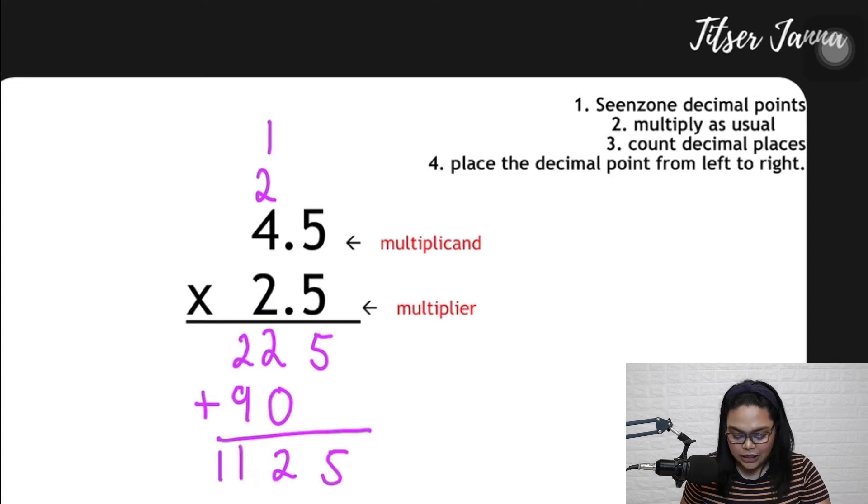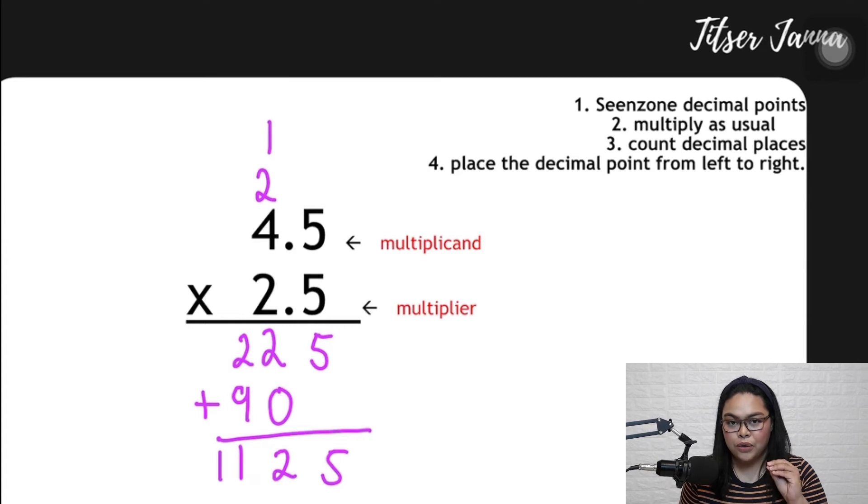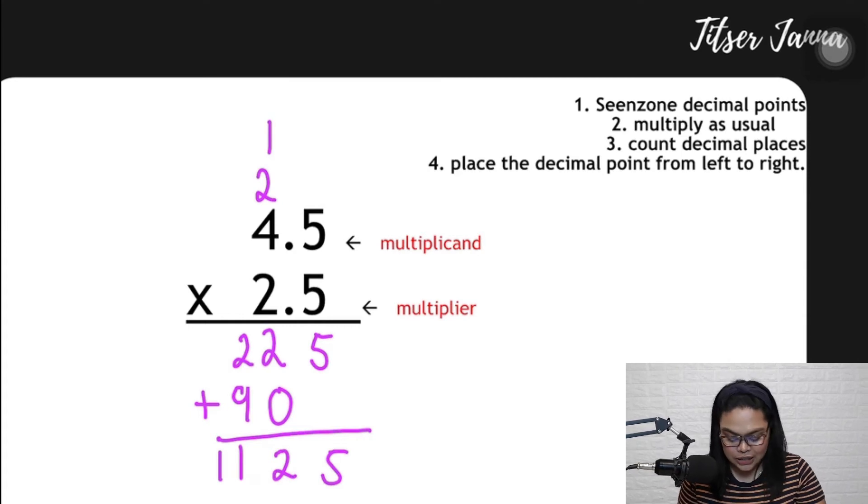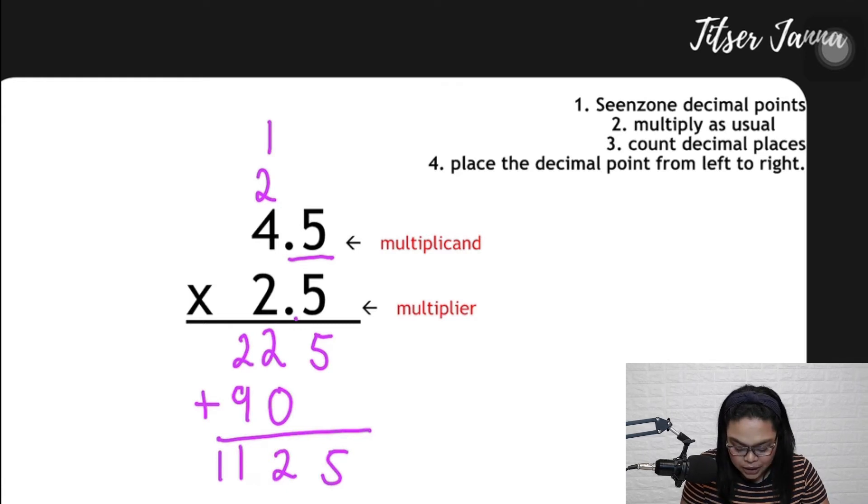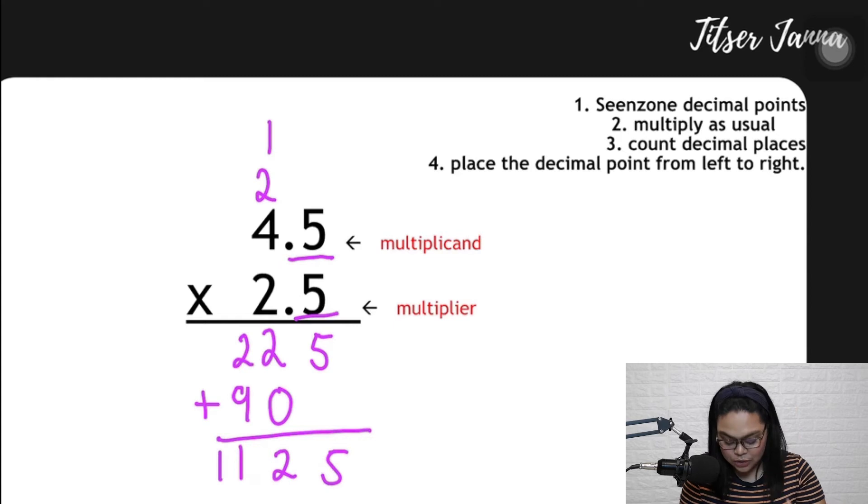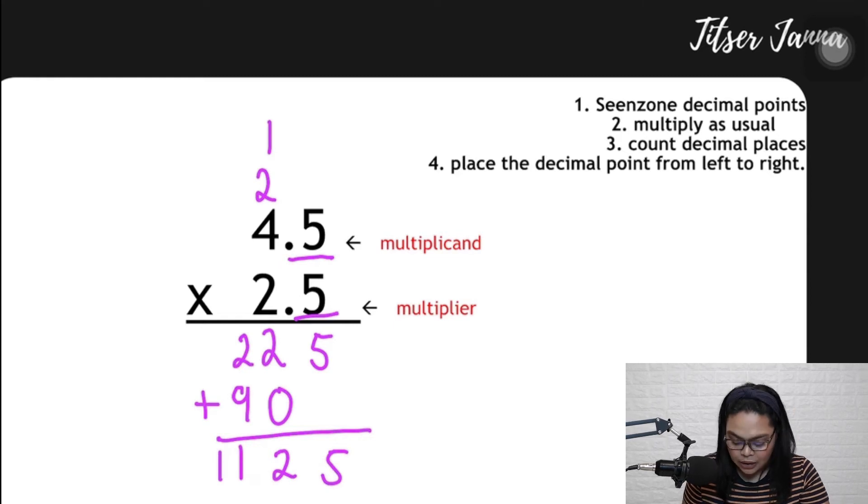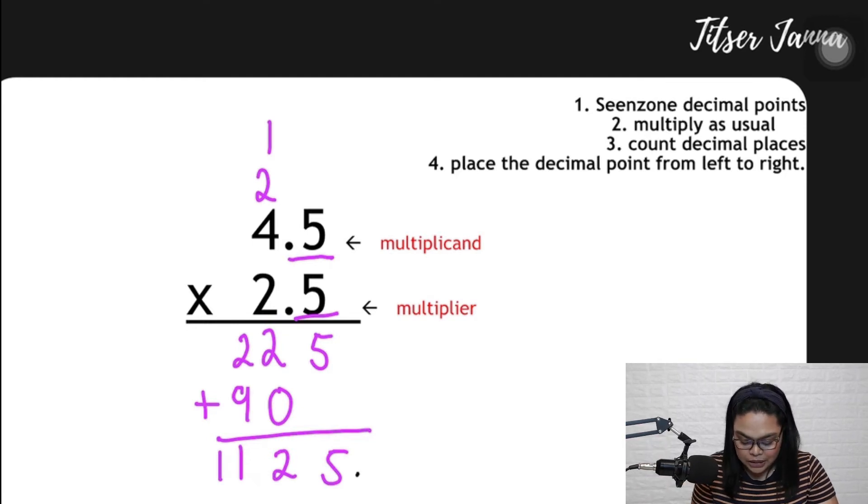How do you count decimal places, guys? Decimal places are the numbers or the count of numbers after the decimal point. In the first number we have one number, so that's one decimal place. And in the bottom we also have one, so that's two decimal places. How do you place that? You have two decimal places. From the right, going to the left, you move back two times. From here, 1, 2. So our answer is 11.25.